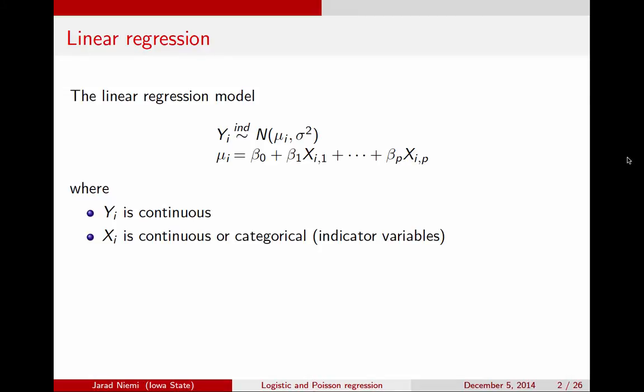The question then becomes, what if we don't have a continuous response? In particular, what if our response is either binary, say a true-false or yes-no answer, or some kind of count? If you find yourself in one of these scenarios, then you probably do not want to be using linear regression. A caveat here is if your counts are very large, you can probably use linear regression. But if your counts are somewhat small, or if your data are binary, then you probably want to use either logistic or Poisson regression, at least as a starting point.